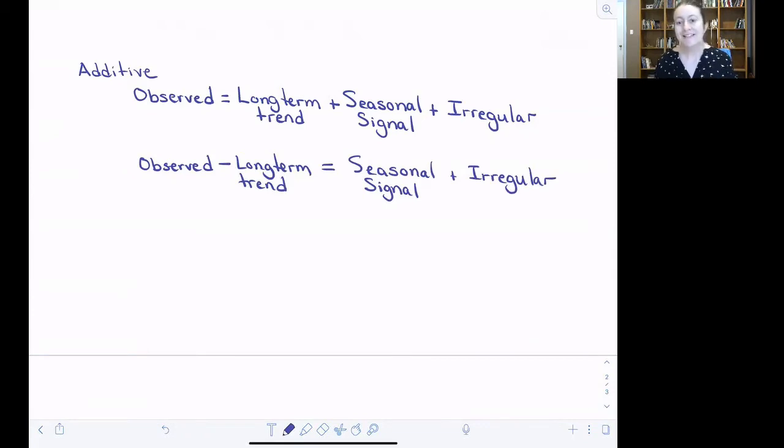Step two, then, is to disentangle the seasonal signal from that irregular signal and get those two isolated. There is another model for how the long-term, the seasonal, and the irregular components are combining to generate our observed data. And that is called the multiplicative approach. Before I write the math out, it's going to be worth showing you visually what the big difference is between an additive and a multiplicative combination of these different time scales.